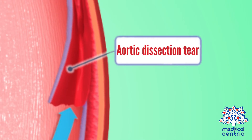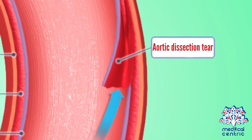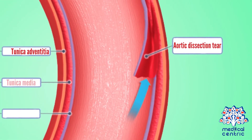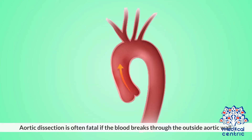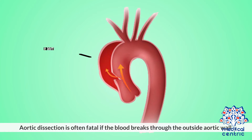In an aortic dissection, a small tear occurs in the intima. Blood surges through this tear, causing the intima layer to separate or strip away from the media layer, or the middle layer.